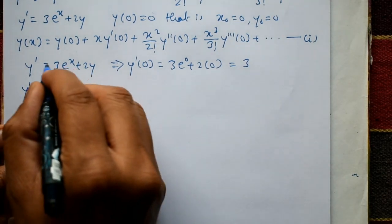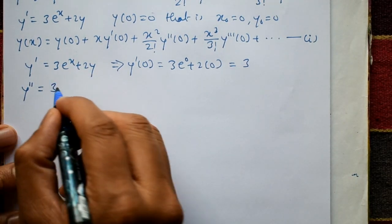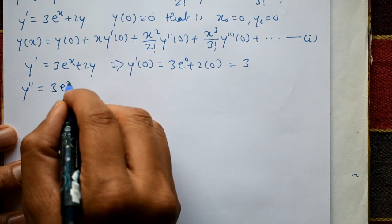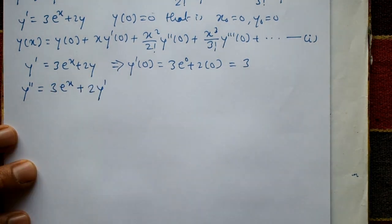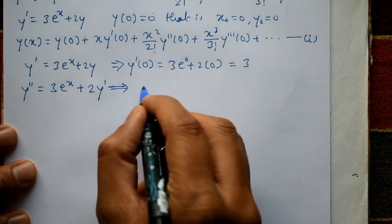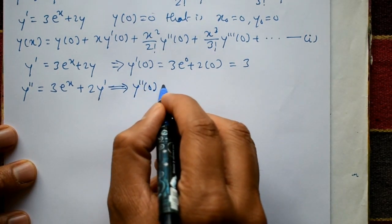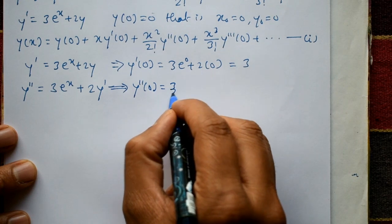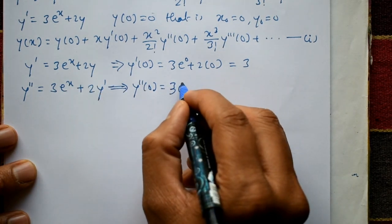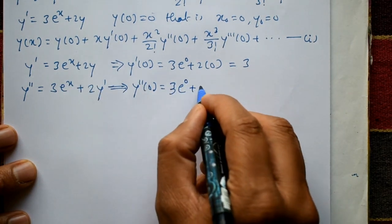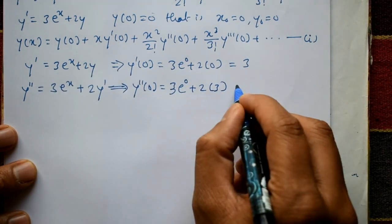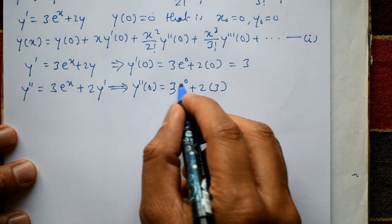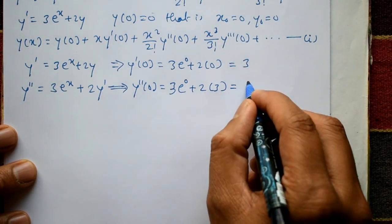Differentiate this equation: 3e^x differentiate gives e^x only plus 2 constant, y differentiate gives y'. y'' becomes 3e^0 + 2·y'(0). y' value is 3, so this is 3 + 6, which equals 9.